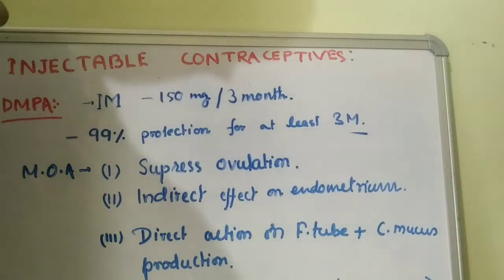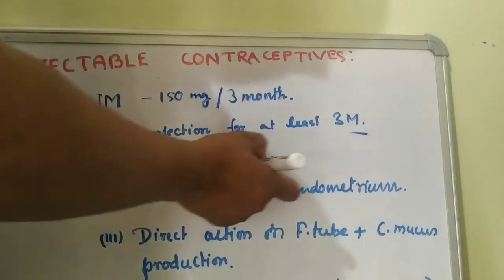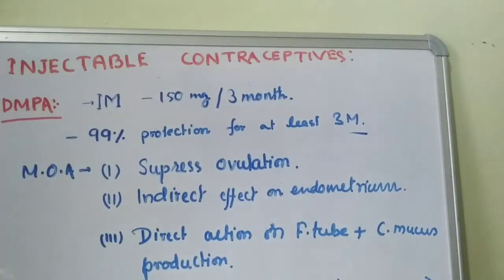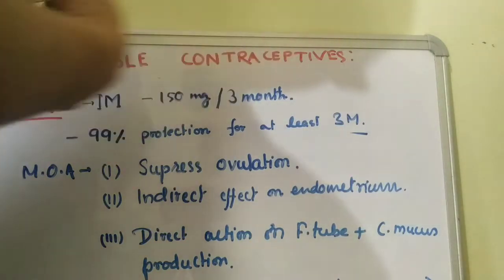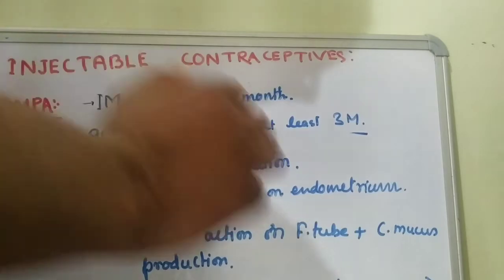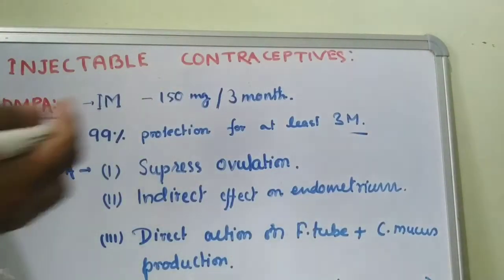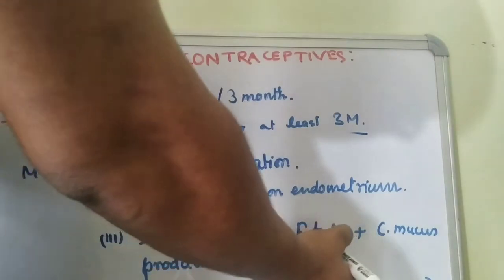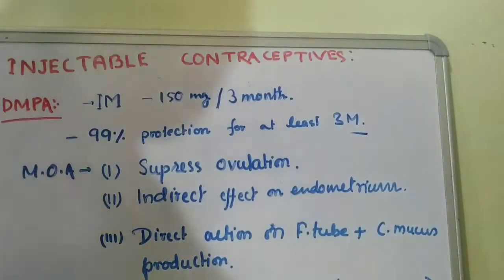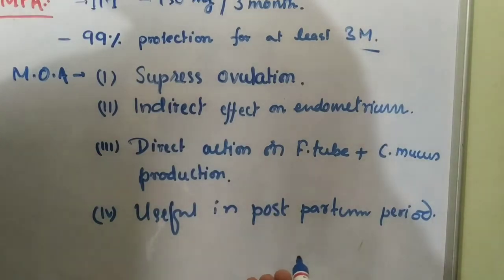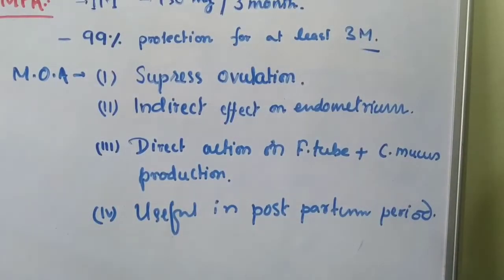Mechanism of action: first, it suppresses ovulation. Second, it has an indirect effect on the endometrium — changes in structure prevent ovulation and zygote formation. Direct action occurs on cervical mucus production. DMPA is also useful in the postpartum period and can be used as a special method. It is given intramuscularly.